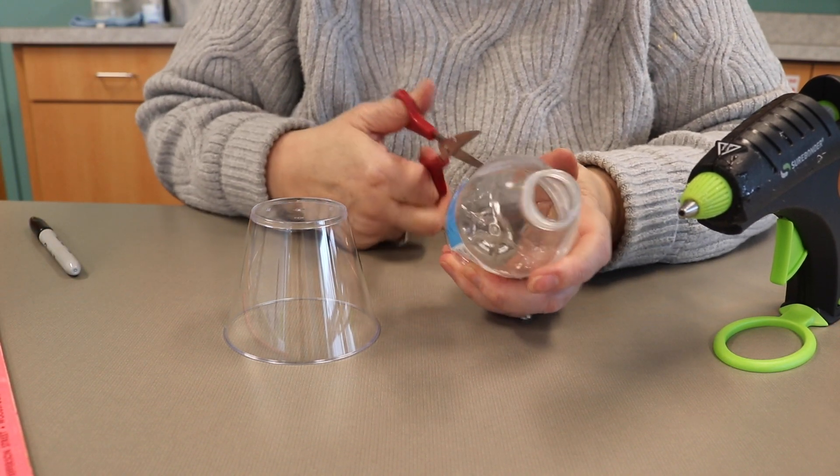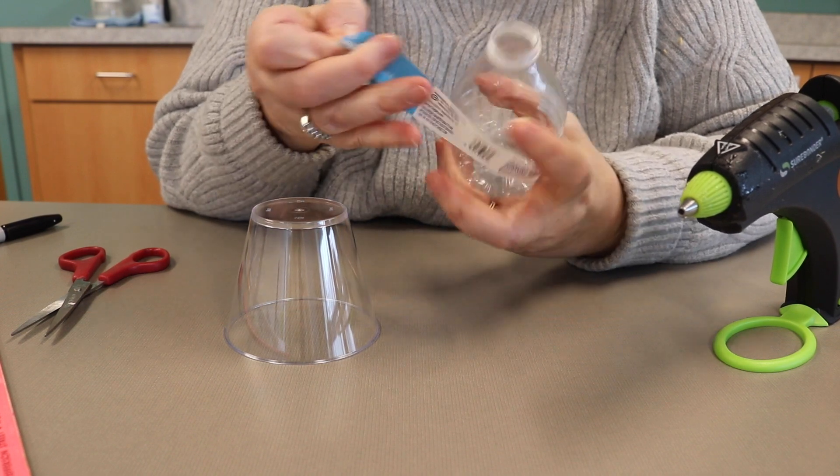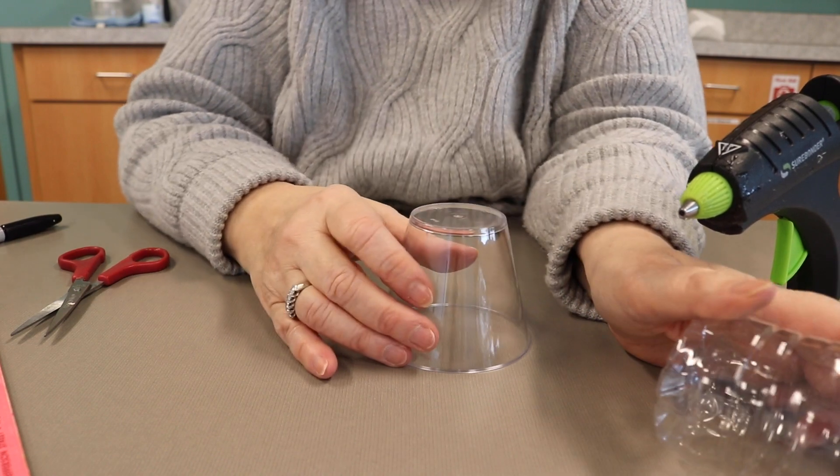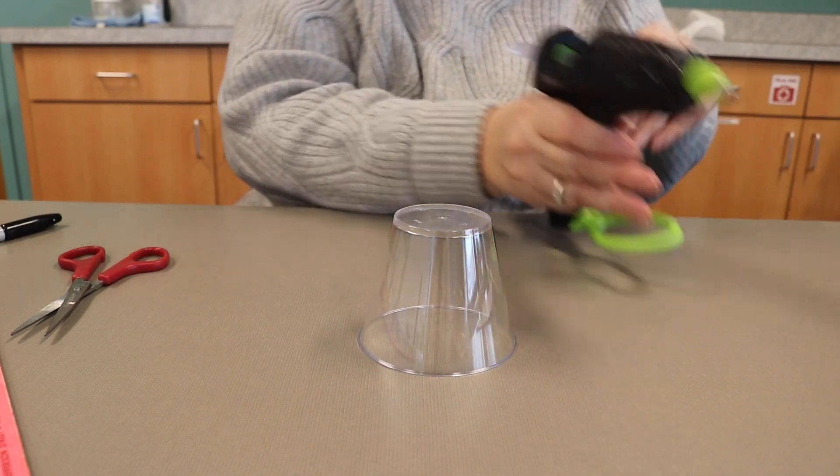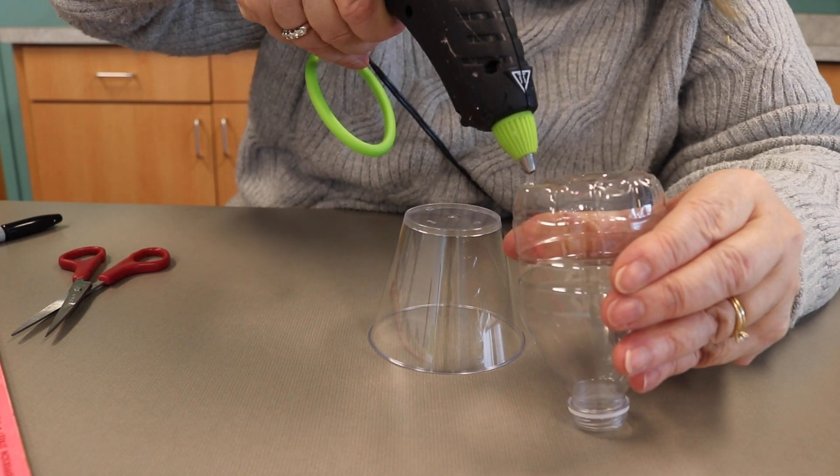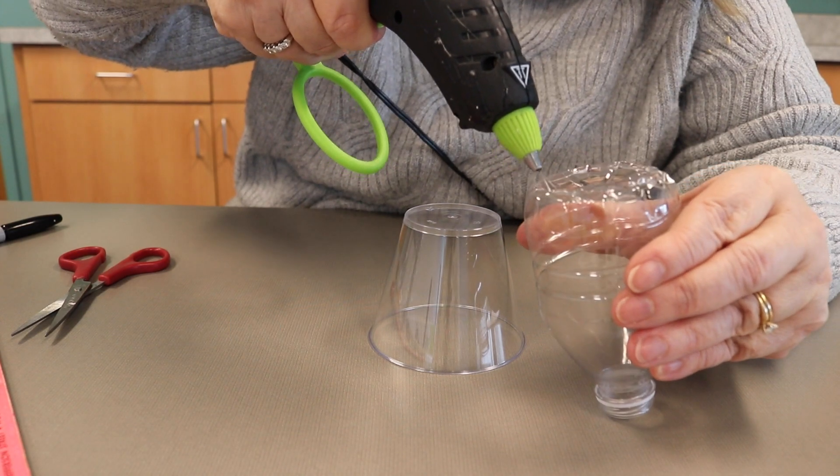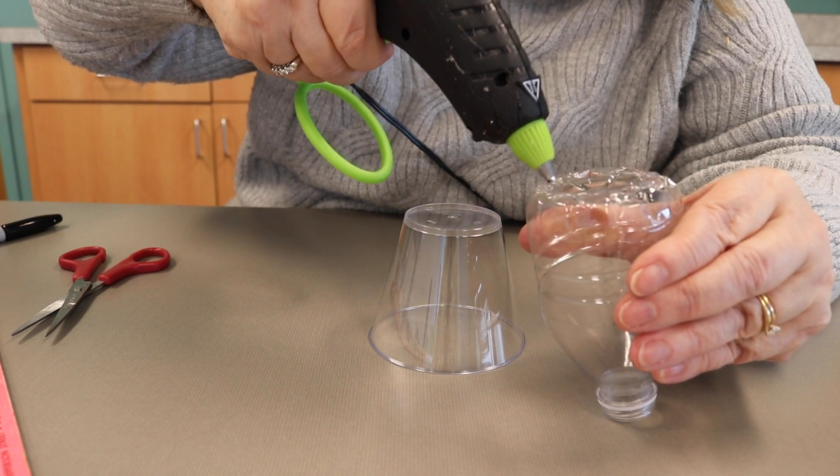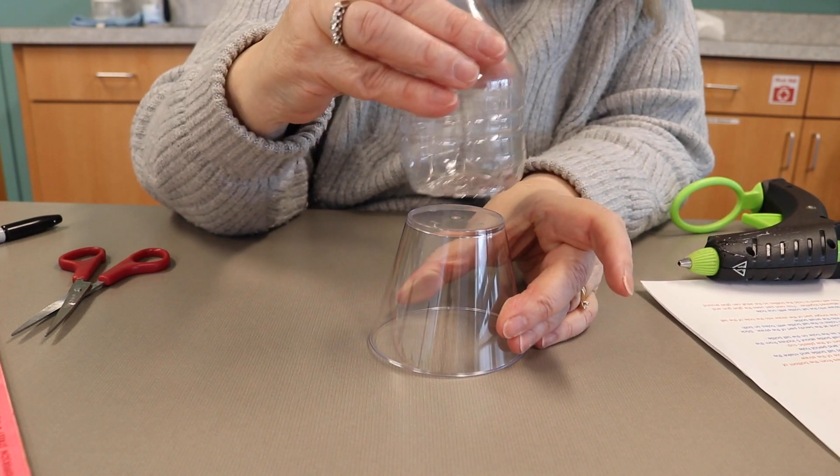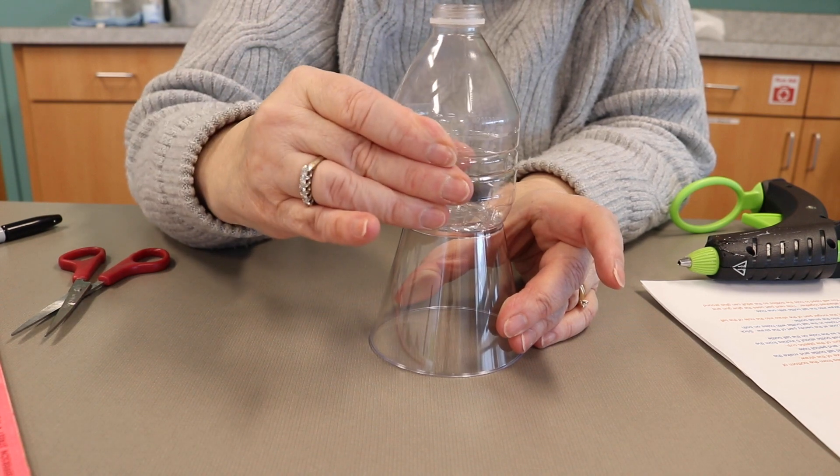On my small bottle, I'm going to take off the wrapper. Now you'll need a mom or dad or an adult to help you do this. You're going to glue along the bottom edge of the cup and glue it right to the upside down plastic cup, right like that.